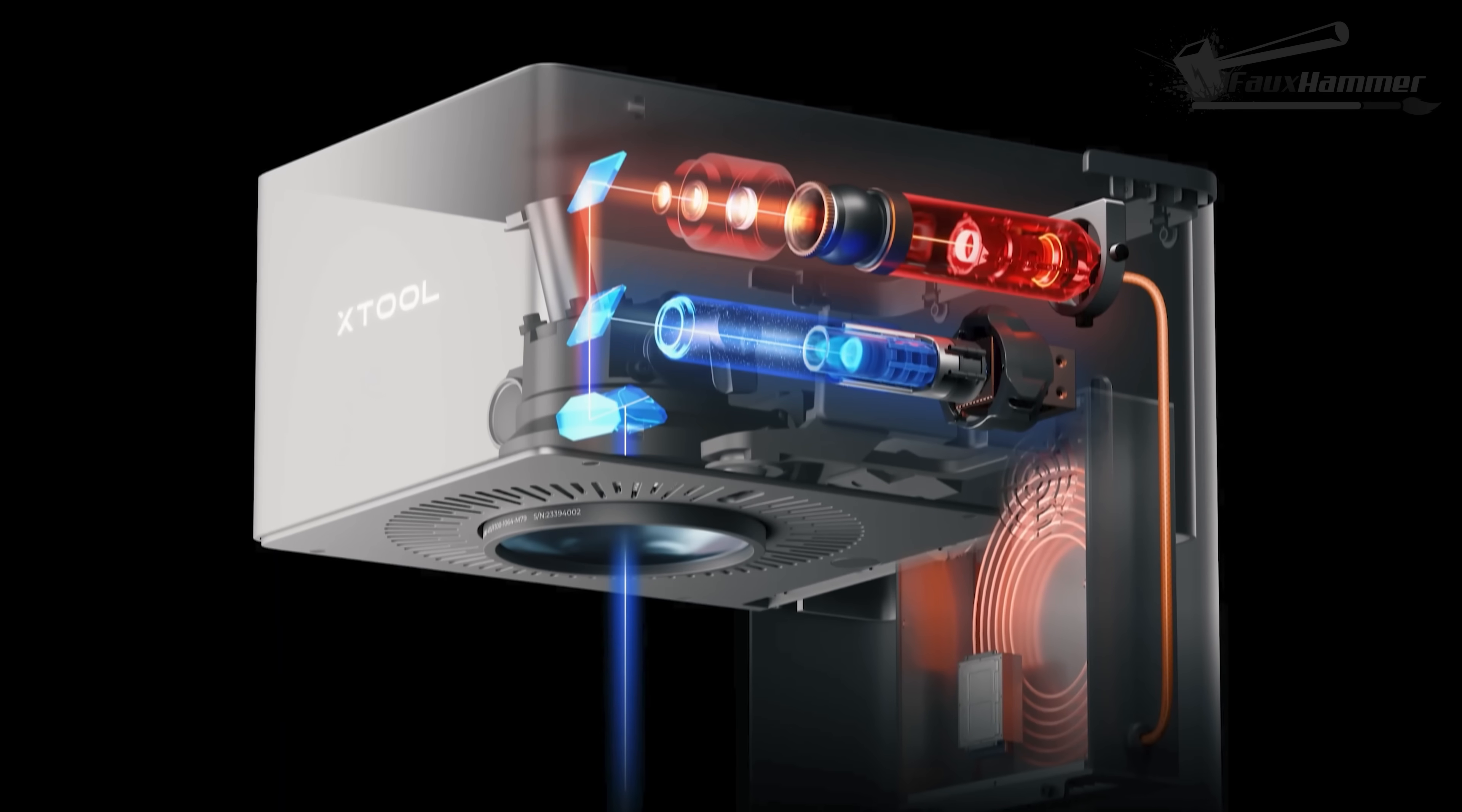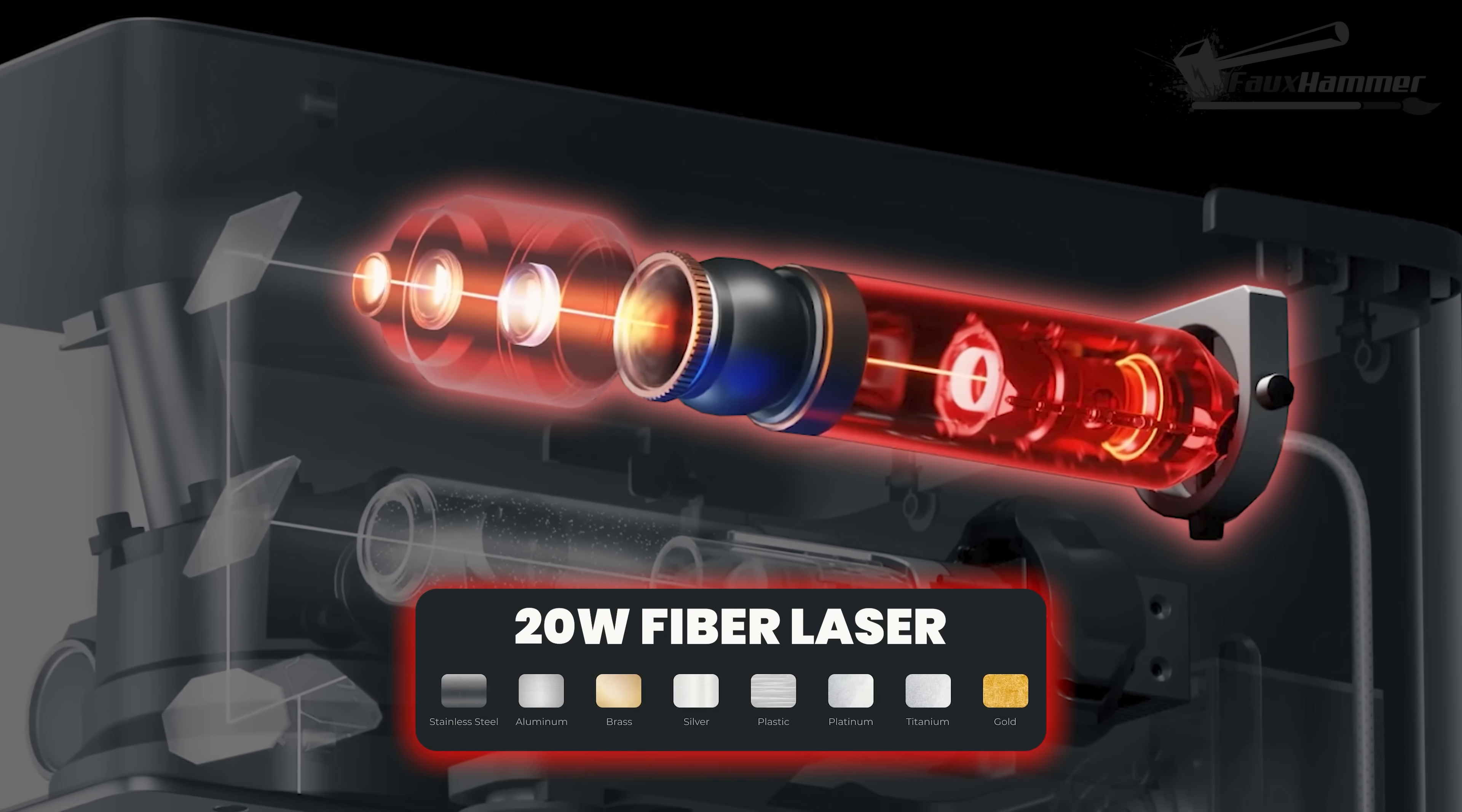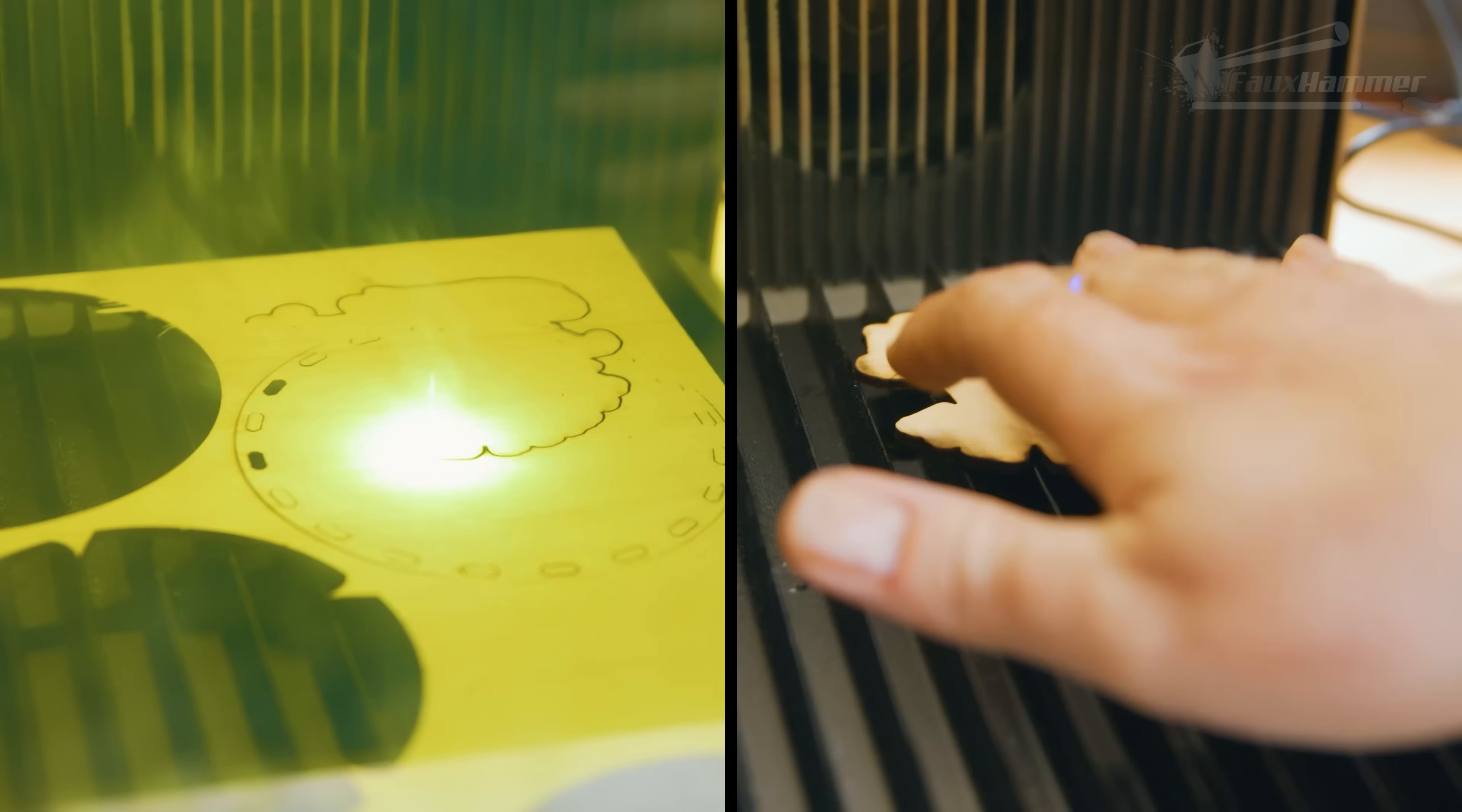This thing has two lasers built in. First, a 20-watt diode laser, which is great for wood, acrylic, leather, slate, and most general engraving or cutting. Then there's a 20-watt infrared fiber laser used for metals like stainless steel, aluminum, brass, and even titanium. This is what gives you those crisp permanent marks that you'd usually only get on industrial kit, or you would spend hours cutting into using just a diode laser.